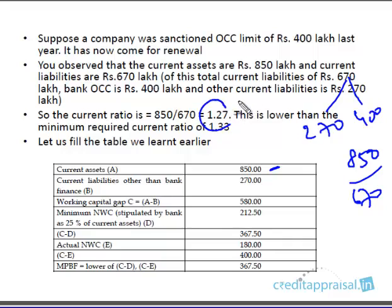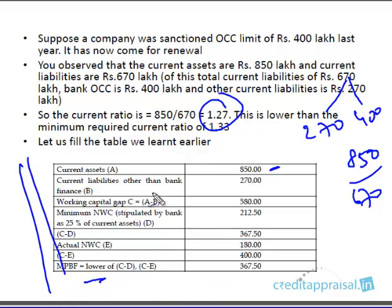If you calculate the current ratio — current assets divided by current liabilities — it is 850 divided by 670, which gives you 1.27. This is less than the minimum required norm of 1.33. This is the situation we are dealing with before doing the MPBF calculation using the second method of lending.